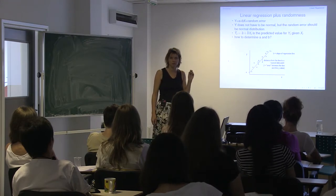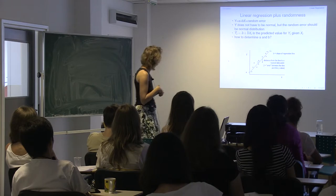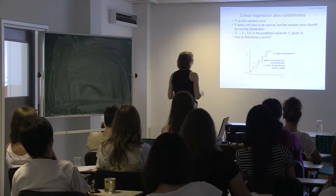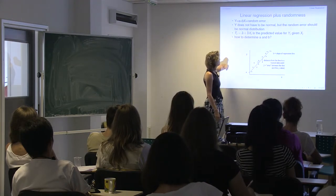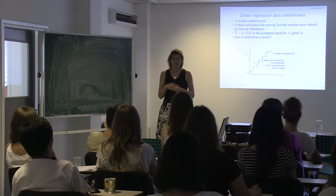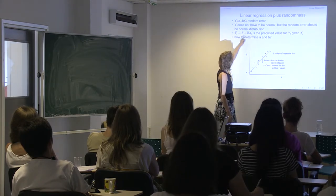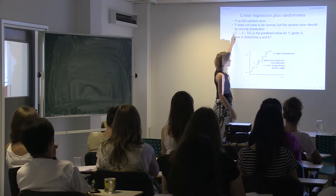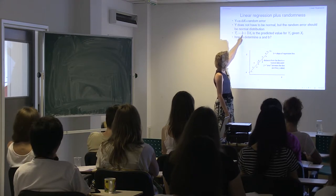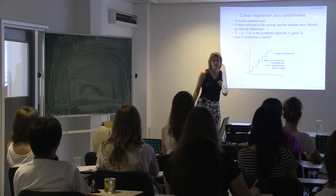Once we determine a and b — I'll tell you how in a minute — we use â and b̂ as estimates. We plug them into the formula and get ŷ, the prediction of Y. If we have an X, we multiply by b̂, add â, and we have a prediction of Y which lies on this line.